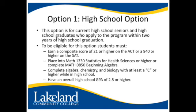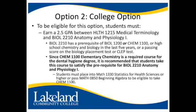To be eligible for this option, students must earn a composite score of 21 or higher on the ACT or a 940 or higher on the SAT, place into Math 1330 Statistics for Health Sciences or higher, or complete Math 0850 Beginning Algebra, complete algebra, chemistry, and biology with at least a C or higher while in high school, and have an overall high school GPA of 2.5 or higher.